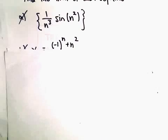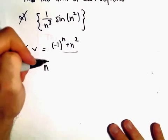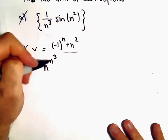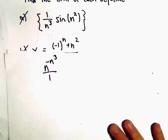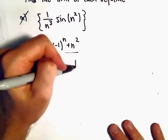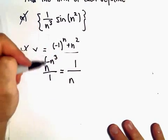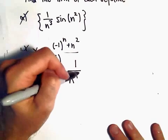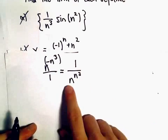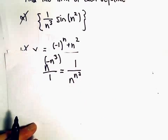The first thing I'm going to do is just rewrite this. So n raised to negative n to the third, we can always put that over 1. We can make negative exponents positive by sticking that exponent in the denominator. So now we have 1 over n raised to positive n to the third.